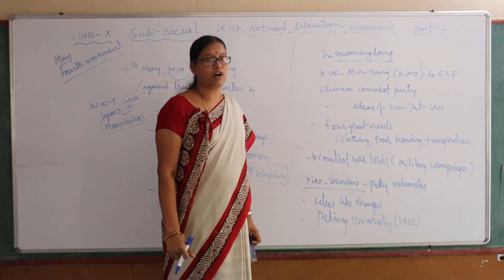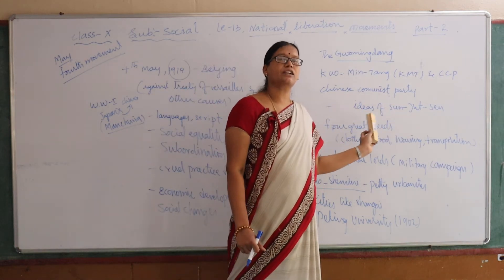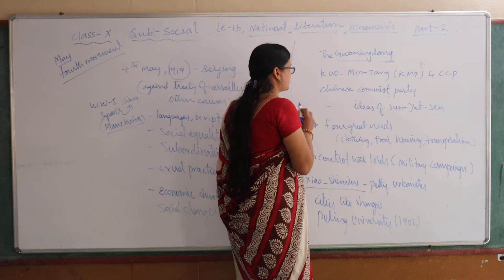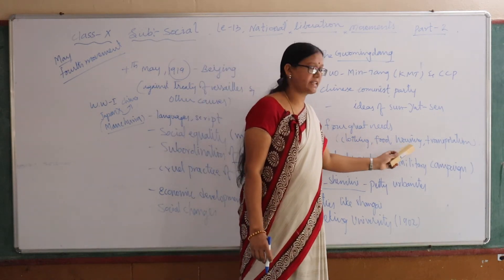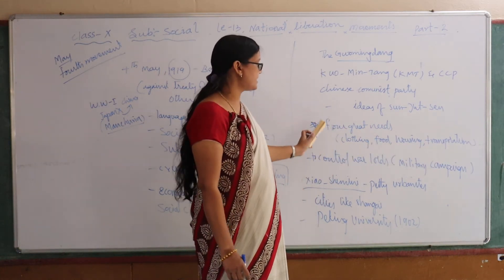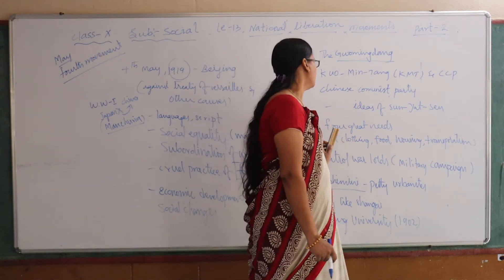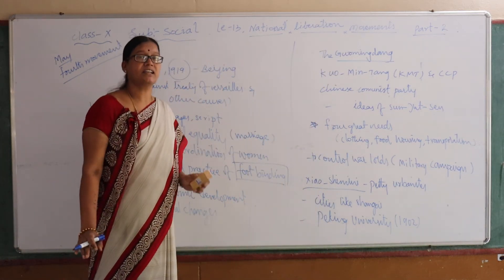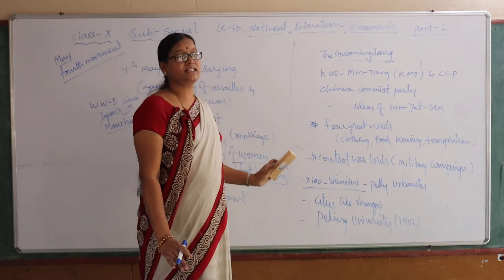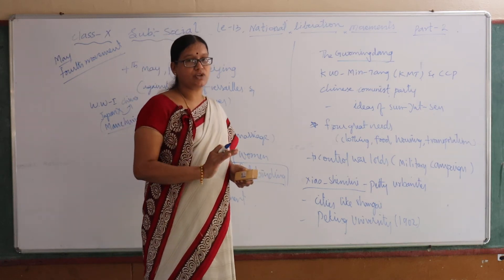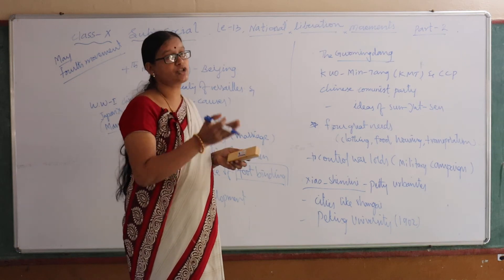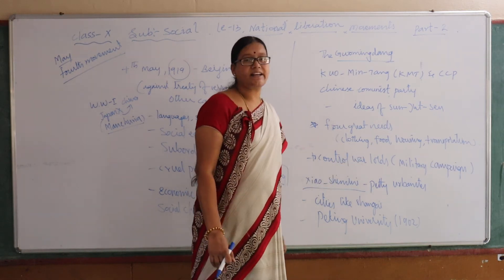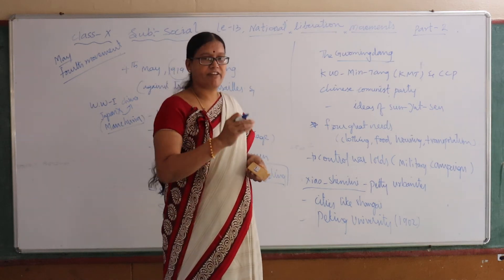Liu Mingdan followed the policies and ideas of Sun Yat-sen. The focus was on the great needs of the people — especially clothing, food, housing, and transportation as primary needs. This party concentrated on meeting those basic needs of the people. They also wanted to remove power from the warlords who were controlling China.